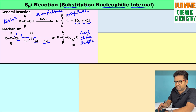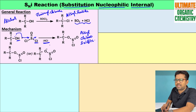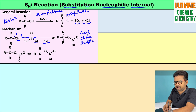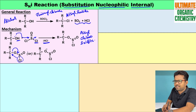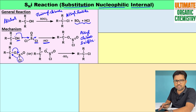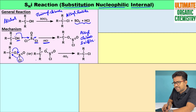Once the alkyl chlorosulphite is formed, there are two kinds of mechanisms proposed. In the first type, the Cl takes the electrons, comes as Cl⁻, and attacks the carbon atom. As a result, the carbon-oxygen bond breaks, the SO₂ part leaves as sulfur dioxide, and alkyl chloride is formed as the product.